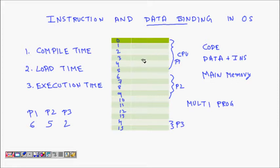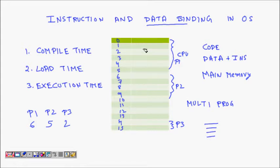This is how multi-programming works. When we compile code, all lines of code are assigned memory locations — instructions and data need to be mapped to memory. The question is: where should each instruction start, and on which memory locations should they be placed? The first approach is compile-time address binding.